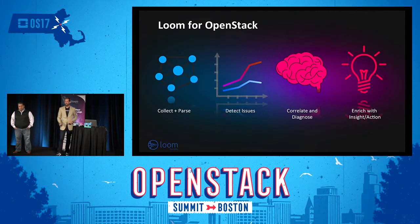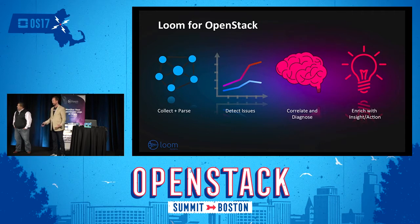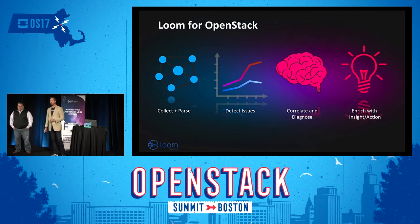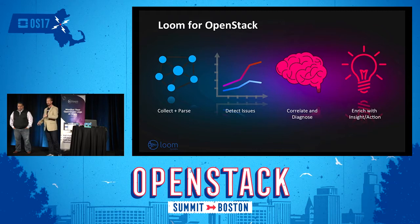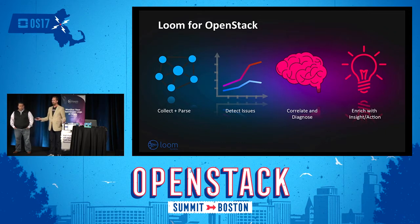What Loom Systems does is AI log analysis. The difficulty with OpenStack deployments — in the words of someone I was speaking with two days ago — is that in OpenStack, the number of combinations and permutations of problems is endless. So traditional monitoring does not work. You can't tell a monitoring tool to look for something in particular and then tell you when that happens, because there are too many things that could go wrong.